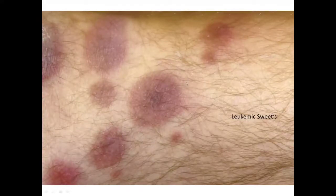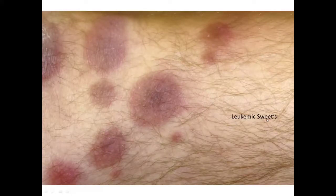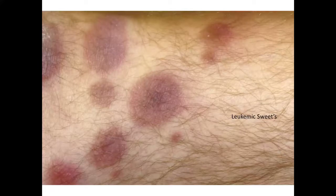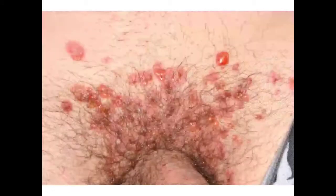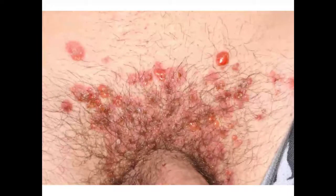I would have said generalized fixed drug if given no history. Sweet's tends to be red, hot, and edematous. Leukemic Sweet's has duskier tones — brown would be unusual; these would have shades of green looking brownish from the myeloperoxidase.